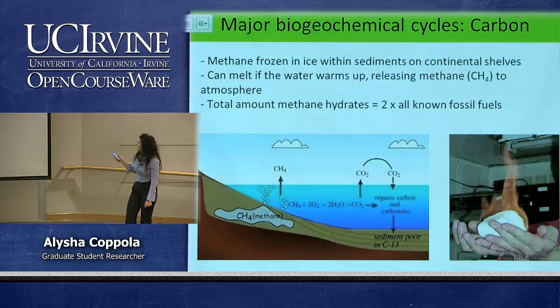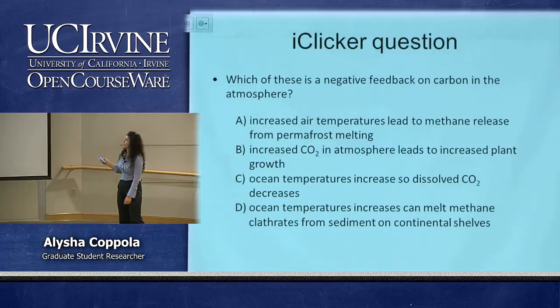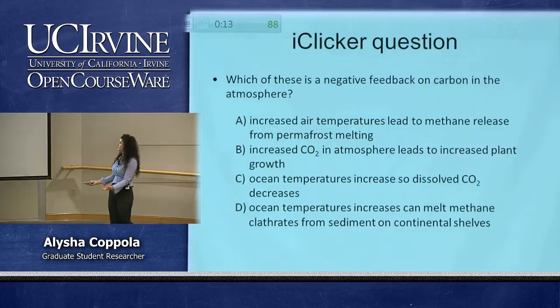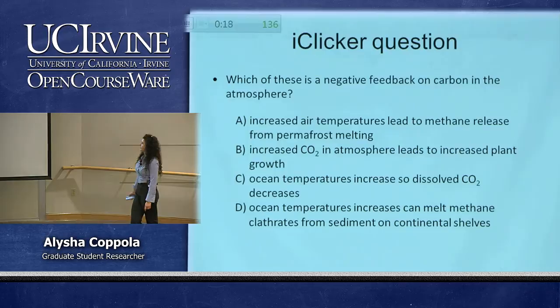The iClicker question asks which of these is the negative feedback on carbon in the atmosphere: (A) increased air temperature leads to methane release from permafrost thawing; (B) increased CO₂ leads to increased plant growth; (C) ocean temperatures increase so dissolved CO₂ decreases; (D) ocean temperatures increase and can melt methane hydrates from continental shelf sediments.